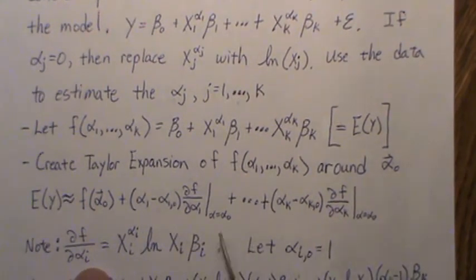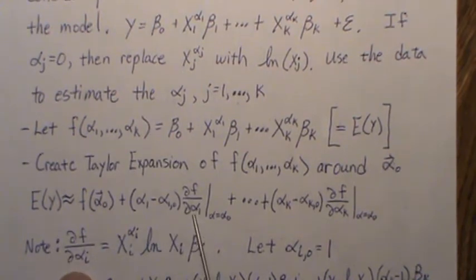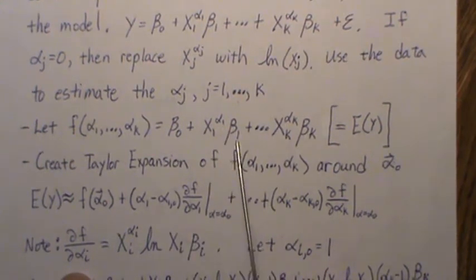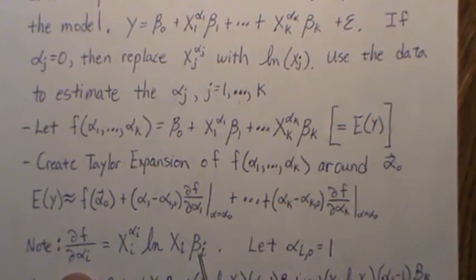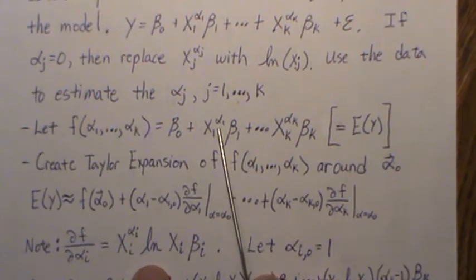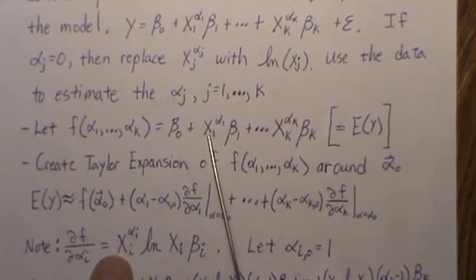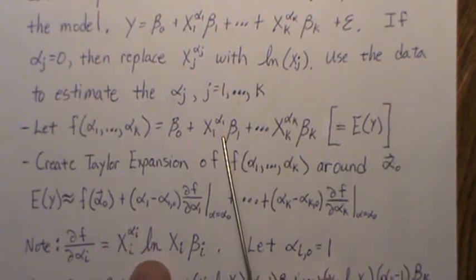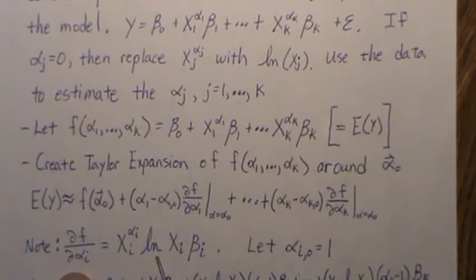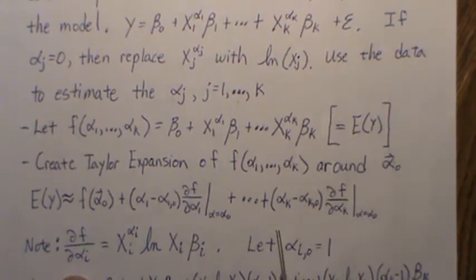And that's it. So now what we do is note that the partial of f with respect to one of the alphas - if we look at this, this is a constant so it can be set aside. But the derivative of this with respect to alpha_1 is you get X_1^alpha_1 times the log of X_1. And so generically this is how you write it, and for each one of these pieces we will get the same thing.